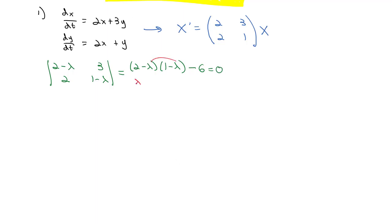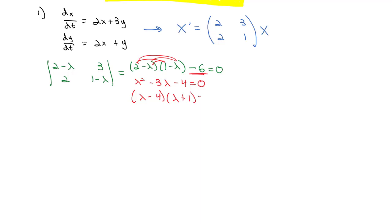Multiplying that out, we get lambda squared minus 3 lambda plus 2 minus 6, which gives us lambda squared minus 3 lambda minus 4 equals 0. That factors to (lambda − 4)(lambda + 1) equals 0, so our eigenvalues are lambda equals 4 and lambda equals −1.